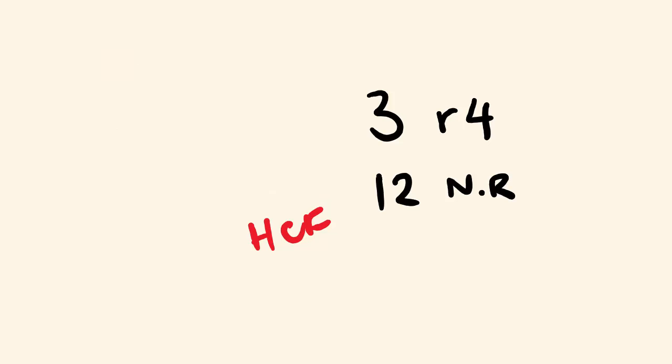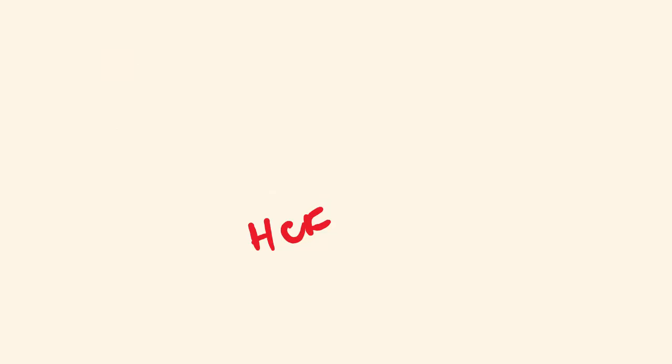So it's the remainders we're interested in. And this is a very, very old method — this is the Euclidean method of doing this.